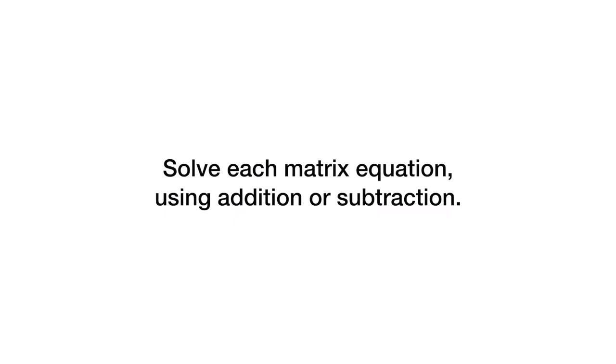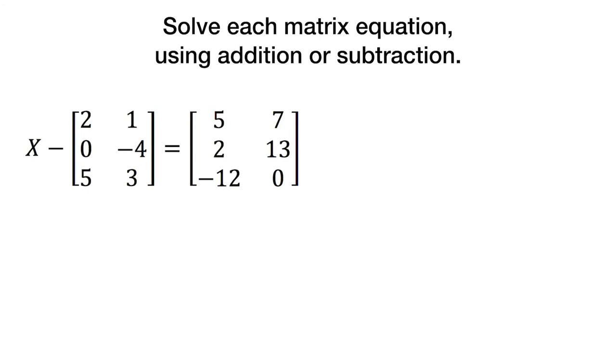All right, now that we've done that, we're going to solve each matrix equation using addition or subtraction. So here we have X minus this matrix right here is equal to this matrix on this side. Now notice these are both 3 by 2 matrices. So I will solve this just like I would any algebraic equation by adding the thing that I'm subtracting from X.